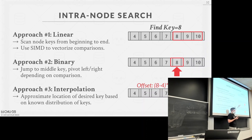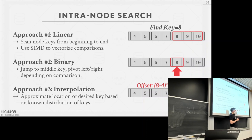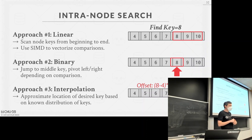Interpolation only works for integers, sorted with no gaps — for example an auto-increment or serial primary key. As far as I know, no real production system actually implements this, but it would smoke everything if you could pull it off.